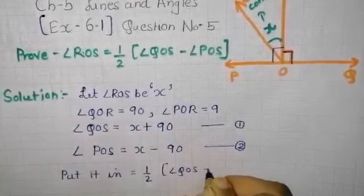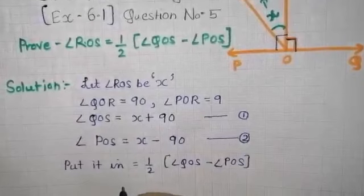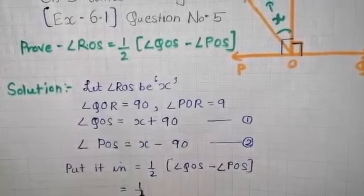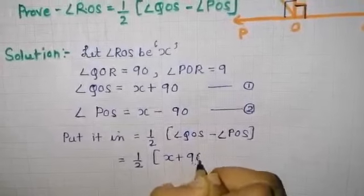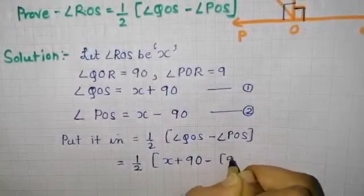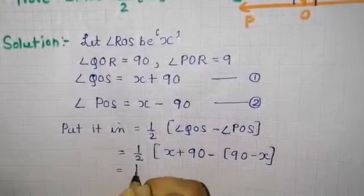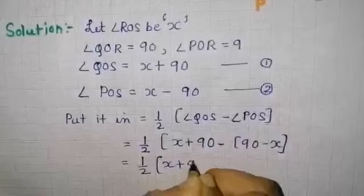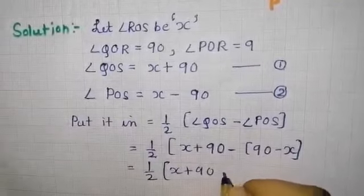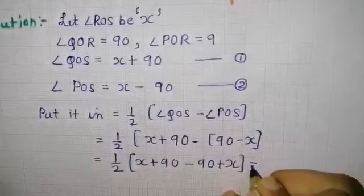So 1/2[(x + 90) - (90 - x)]. The answer will be 1/2[x + 90 - 90 + x] as you distribute the signs, and you will get 1/2[x + x].